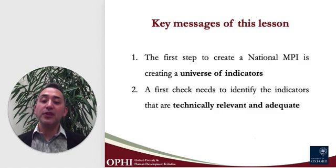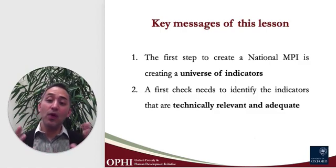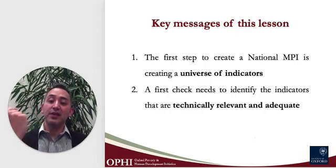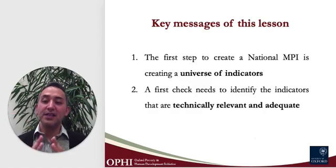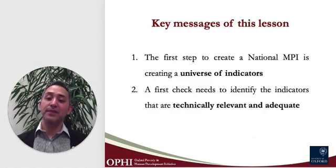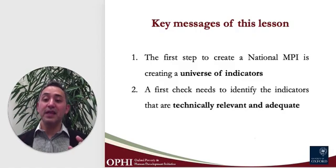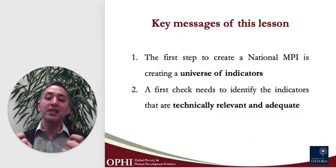For example, you may wish to include gender disparities by designing one indicator that captures the proportion of men in the household who don't have a certain level of education, and then another indicator capturing the proportion of women who don't have that same level of education. As another example, you may wish to consider housing conditions. It could be the case that you have separate programs to improve roof, floors and walls, in which case you may consider three separate indicators. But if those three elements are combined in a more comprehensive housing program, then it would make sense to have a single combined indicator of housing conditions.